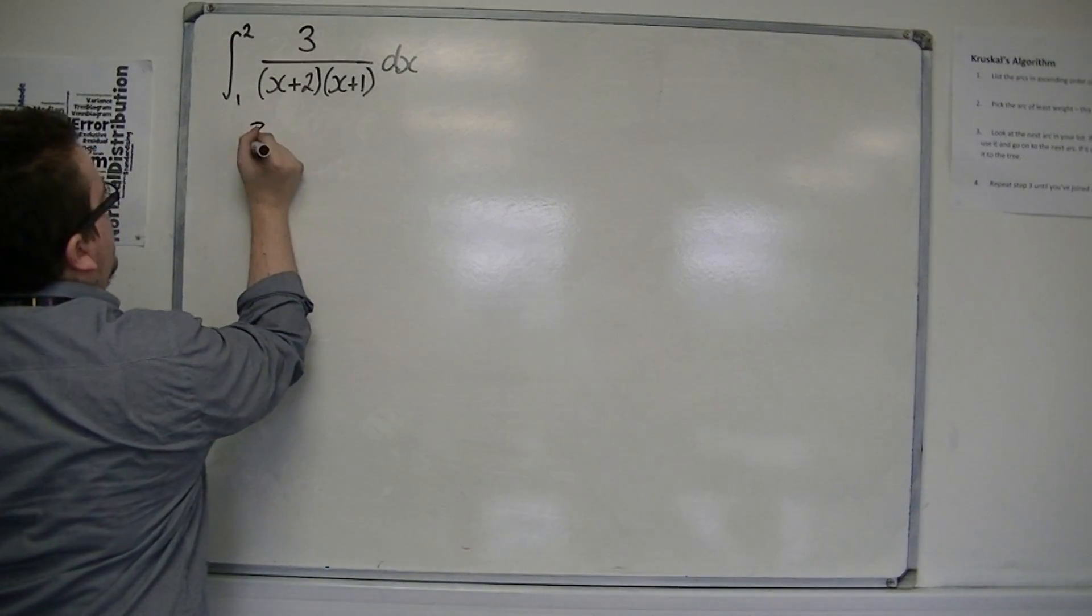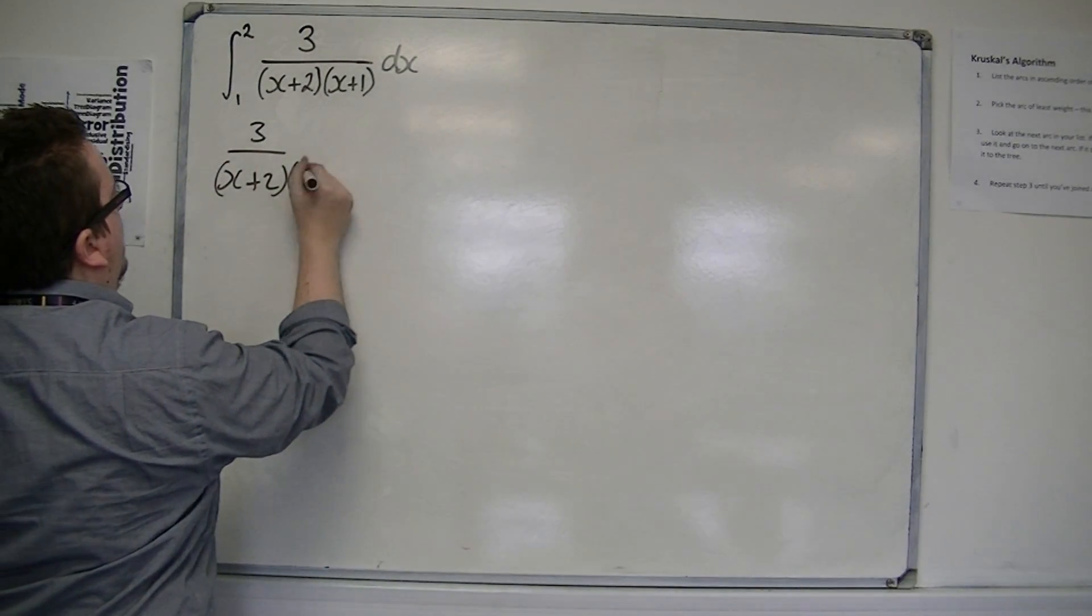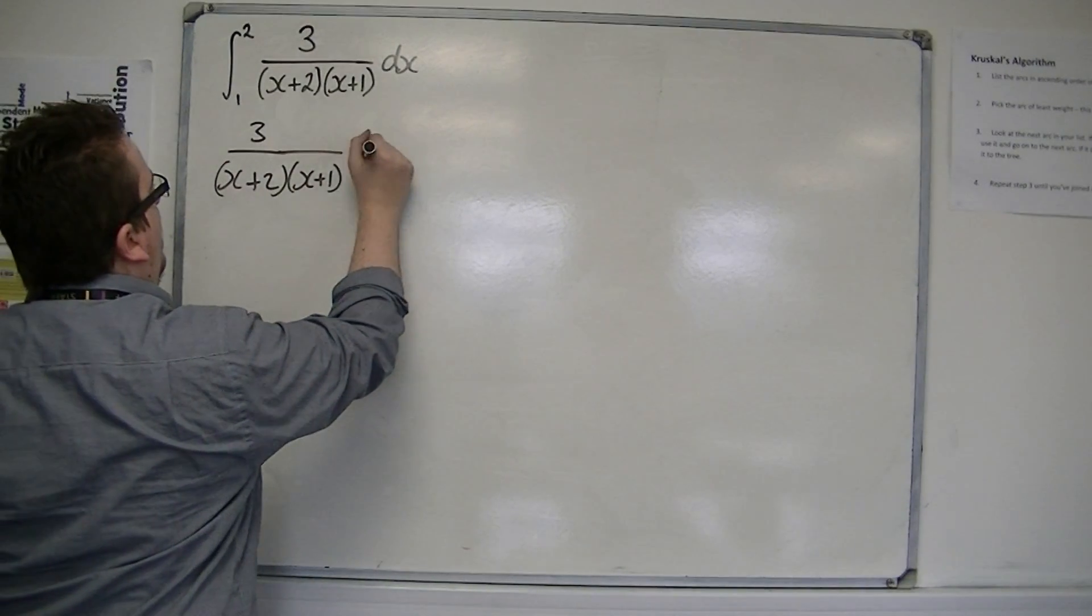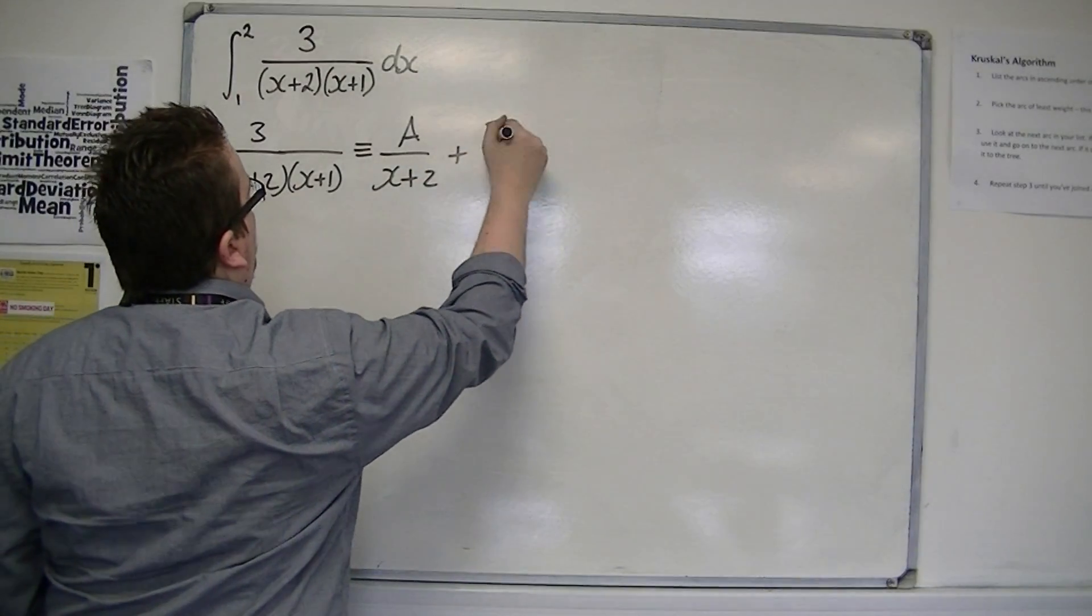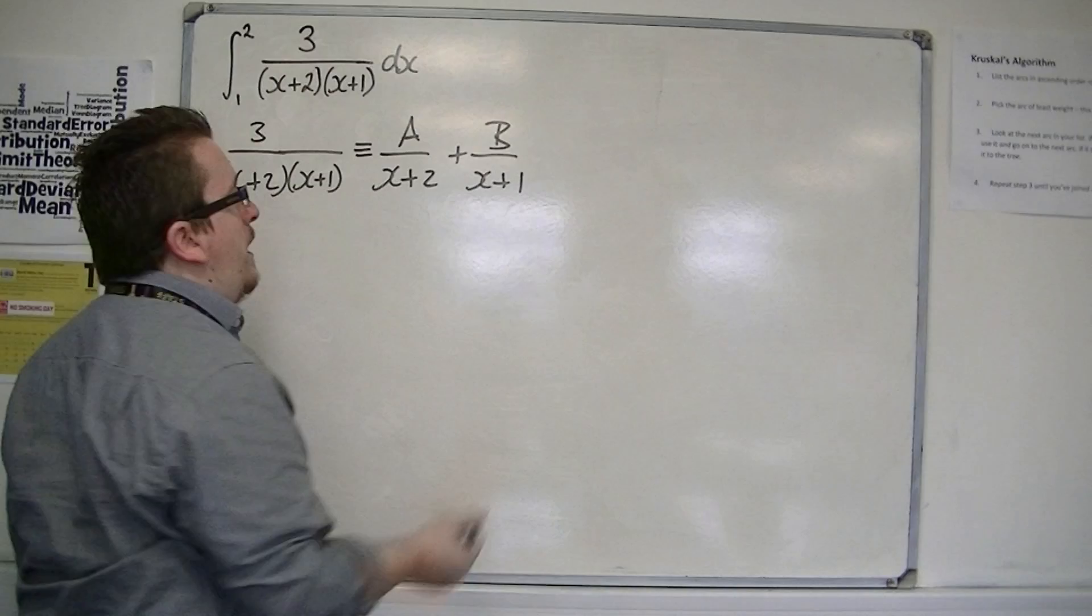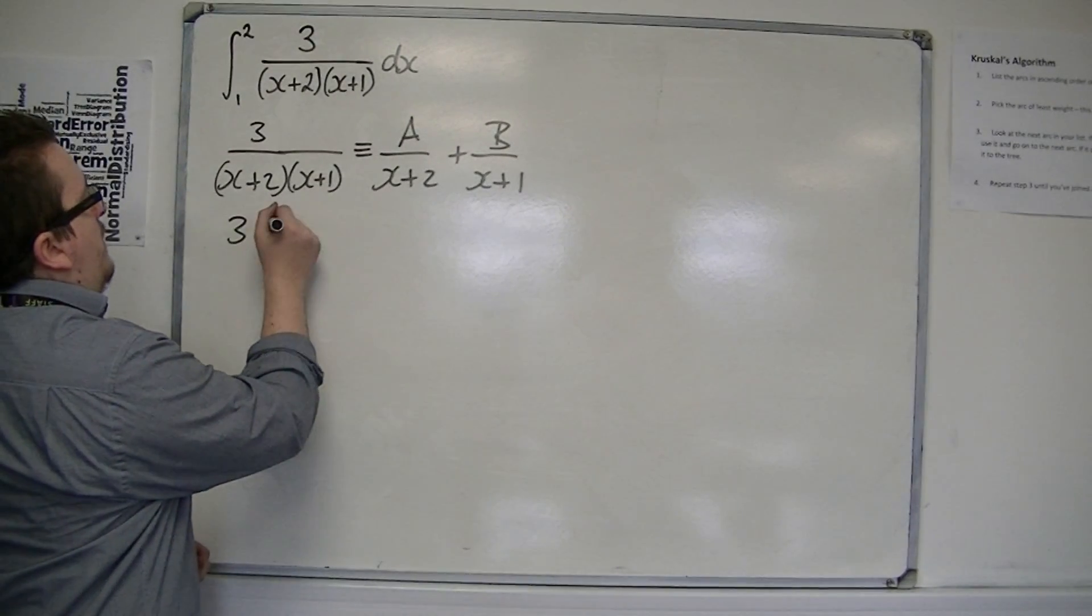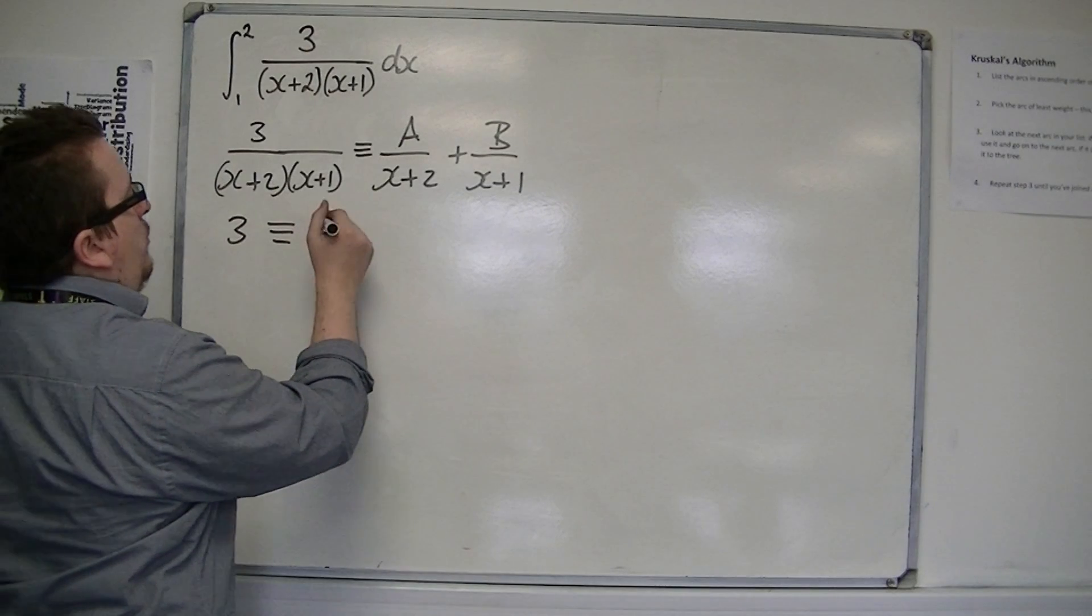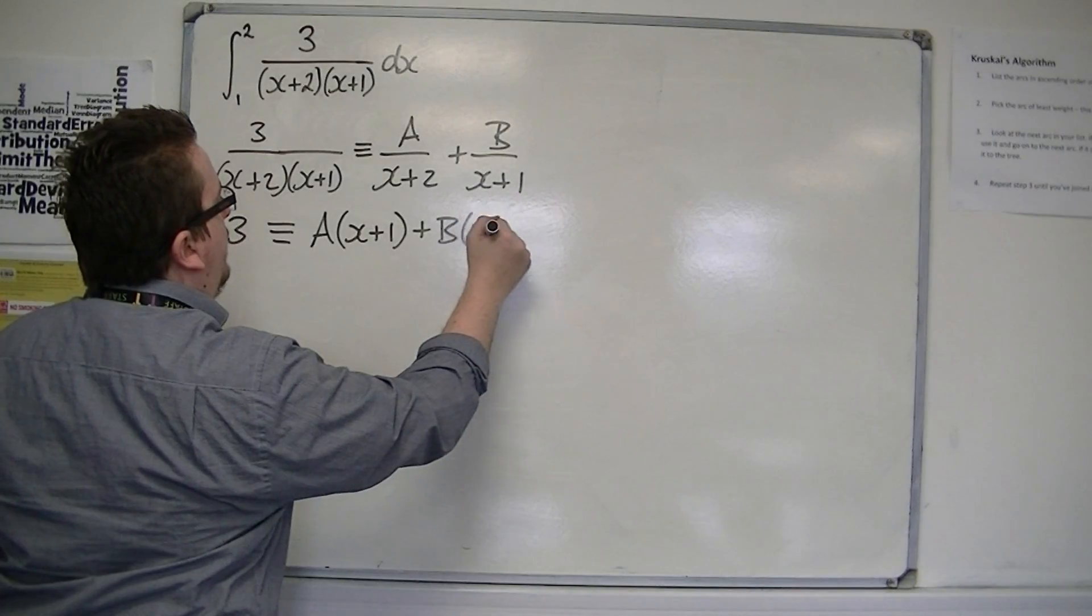So we are going to write 3 over (x+2)(x+1) as being equivalent to A/(x+2) + B/(x+1). And I'm going to need to find out what that A and B are. So I multiply through by (x+2)(x+1), and I get A(x+1) + B(x+2).